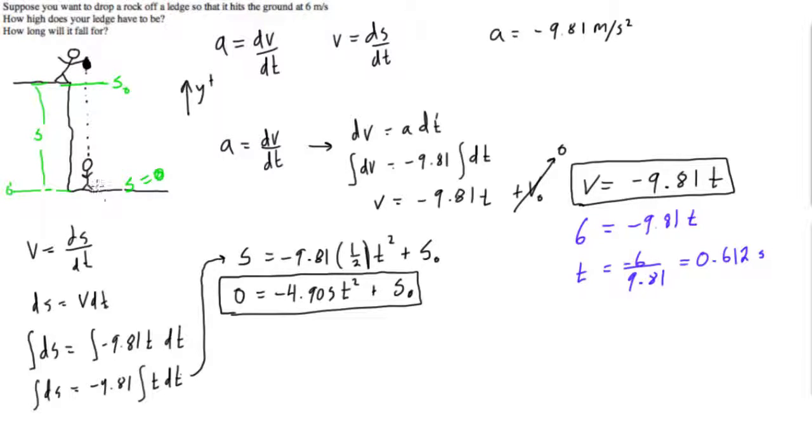So that's how long it falls for, and in order to gain enough velocity to hit the ground or his buddy that's at this s, the height of zero, with six meters per second. So now all we need to do is we wanted to solve for how high does it have to be. Well we already know that it ends at zero, so its initial height is s naught.